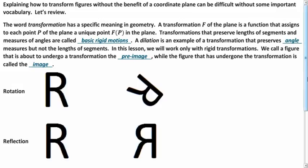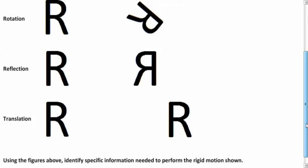So I'd like you to take a moment and look at these three examples. We have the three basic rigid motions here. Think about what information you would have to tell someone in order to perform the shown transformation. So pause it for a moment and think about it.